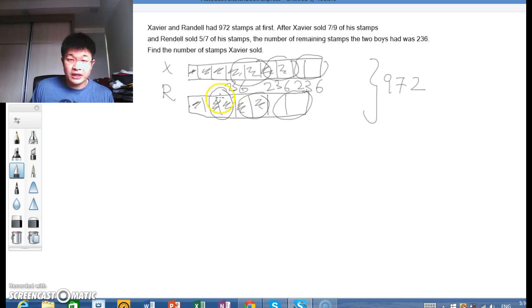How many of these 236 do we have? We have three of them. So the value of this one and this one would be 972 minus 3 times 236, which will be 264. This means that three units of Xavier and one unit of Randall equals 264.